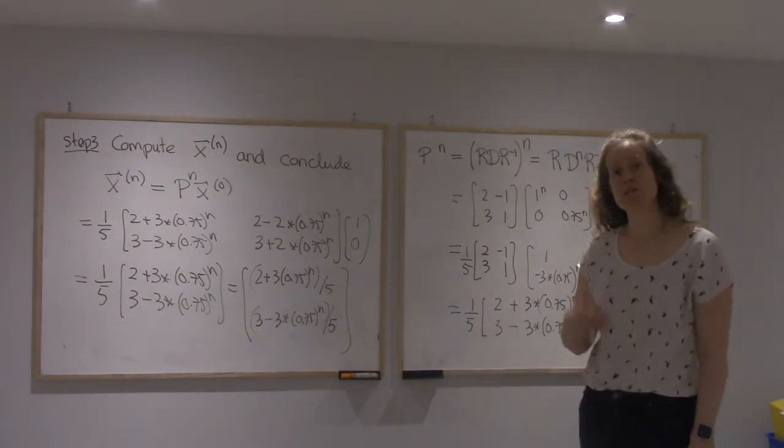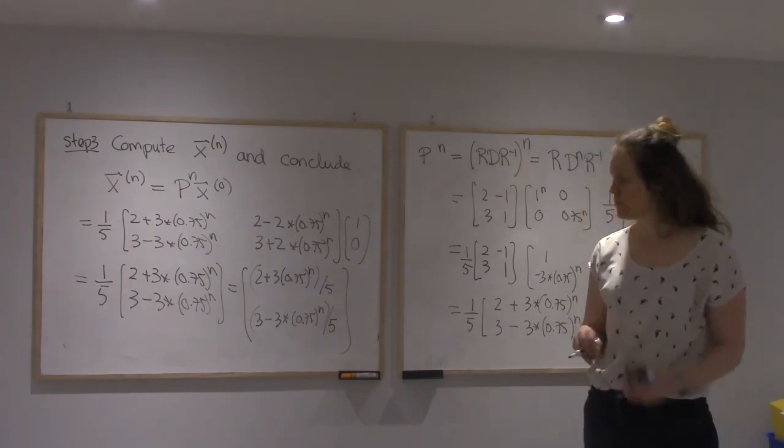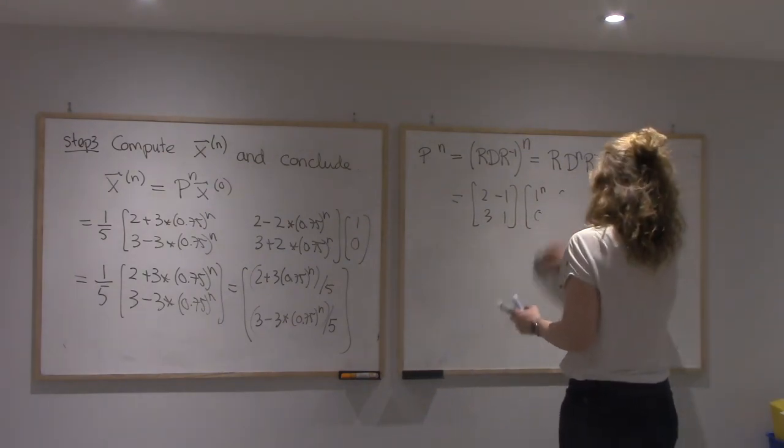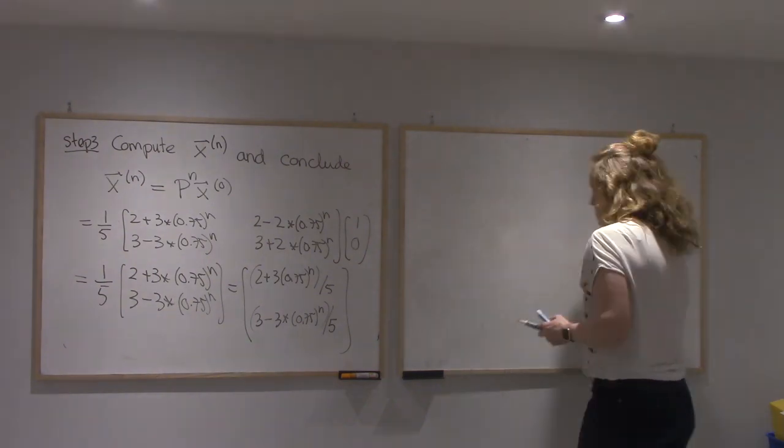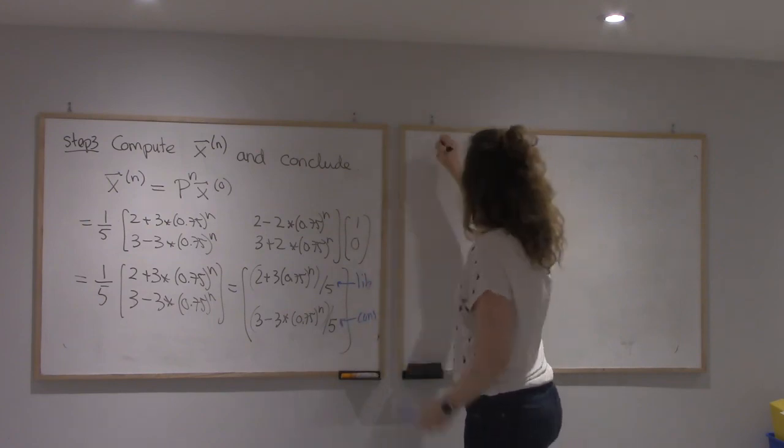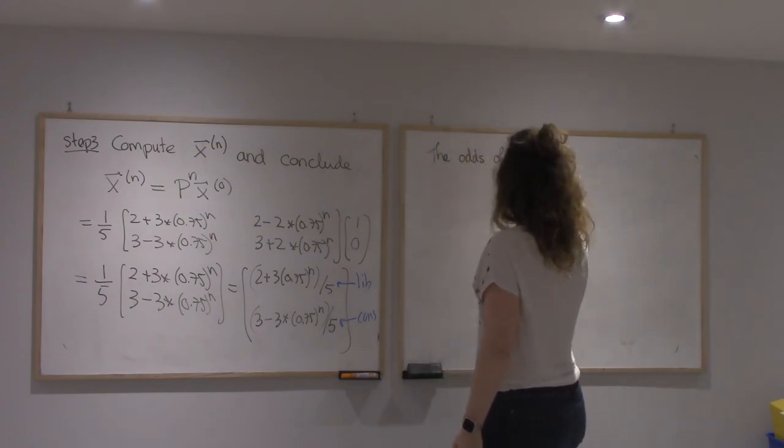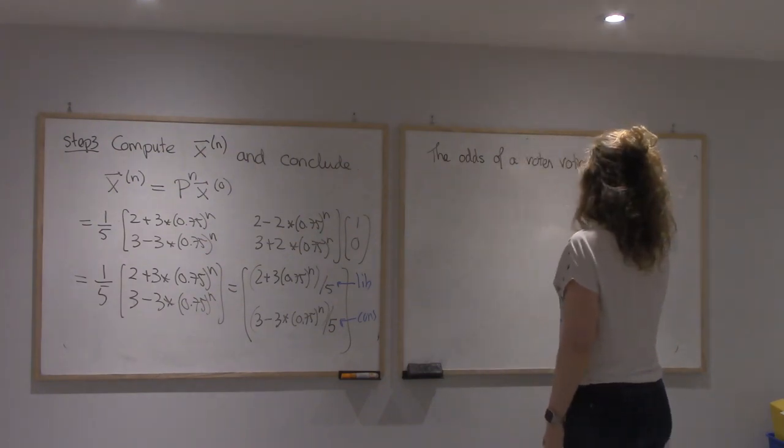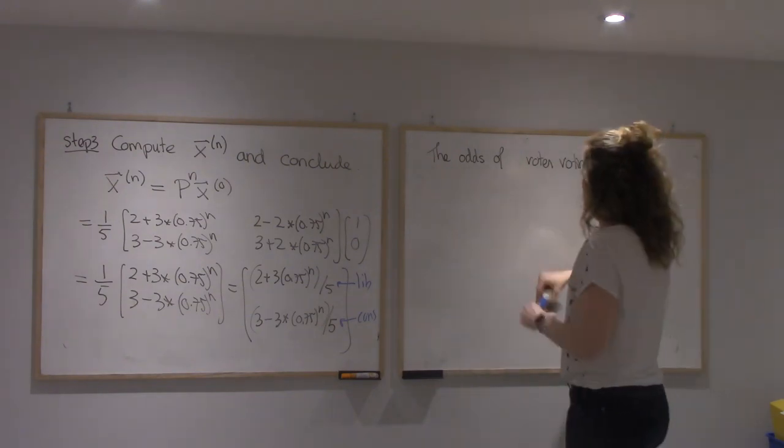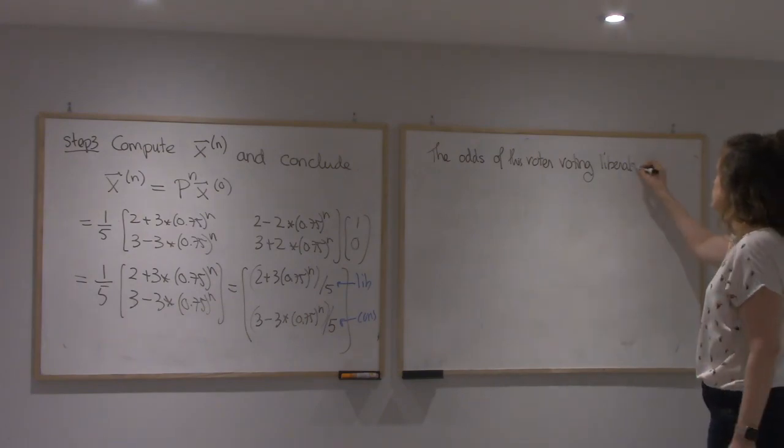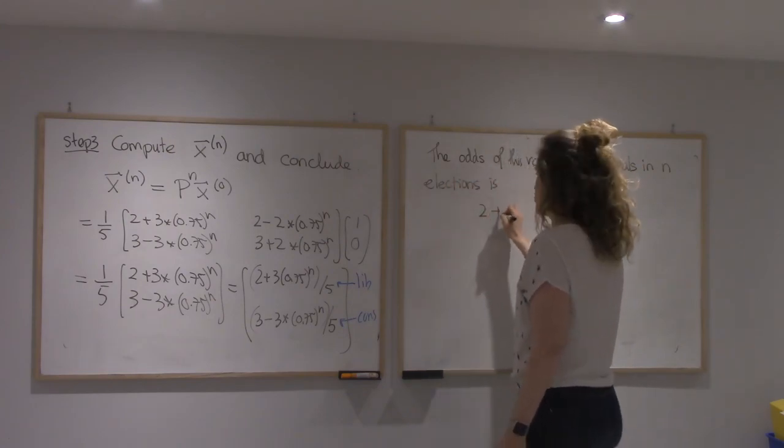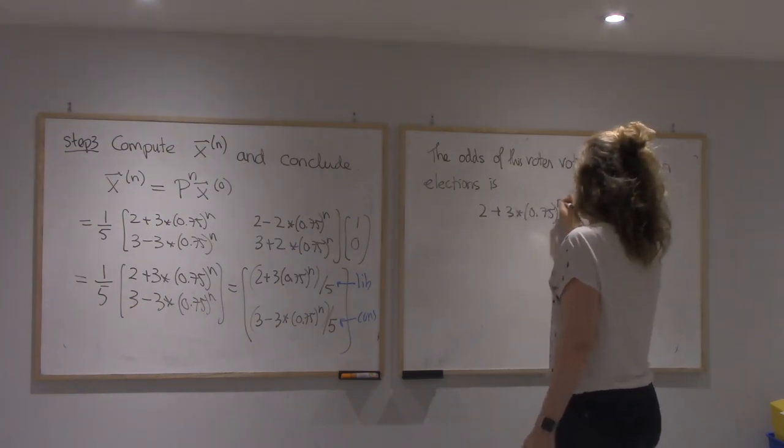This vector includes the probability of the voter voting Liberals n elections from now and Conservative. We were only asked for one of those two. So from this vector, we get that the probability of voting Liberal is this one. This is the probability of Conservative. So the odds of this voter voting Liberals in n elections is (2 plus 3 times 0.75^n) over 5.